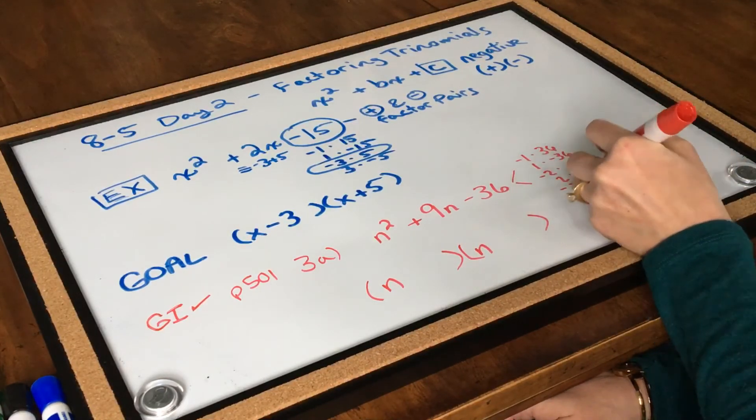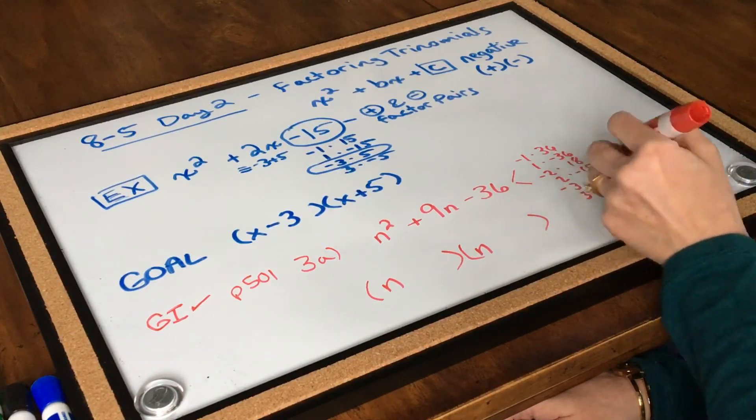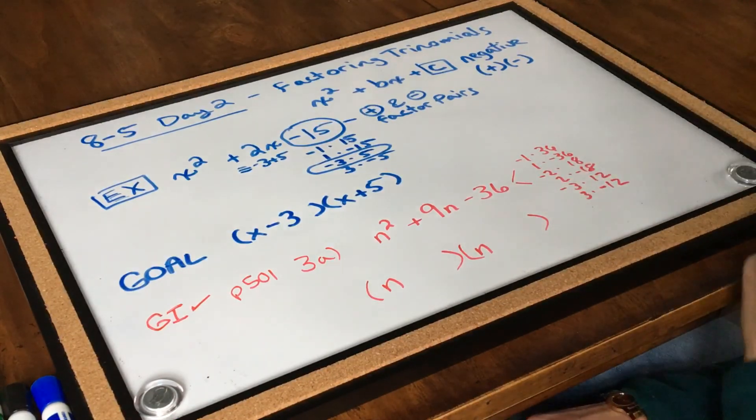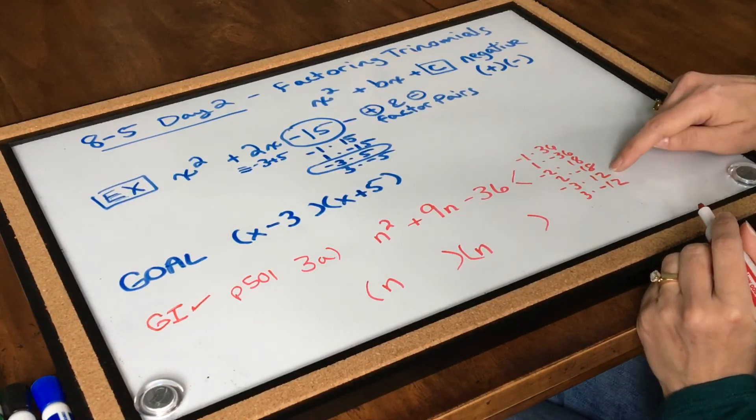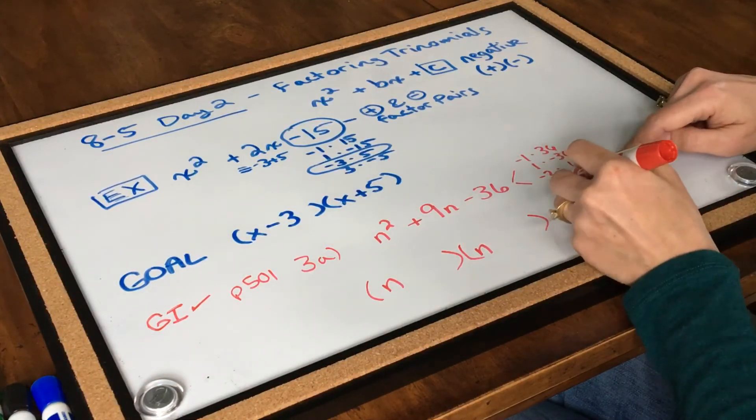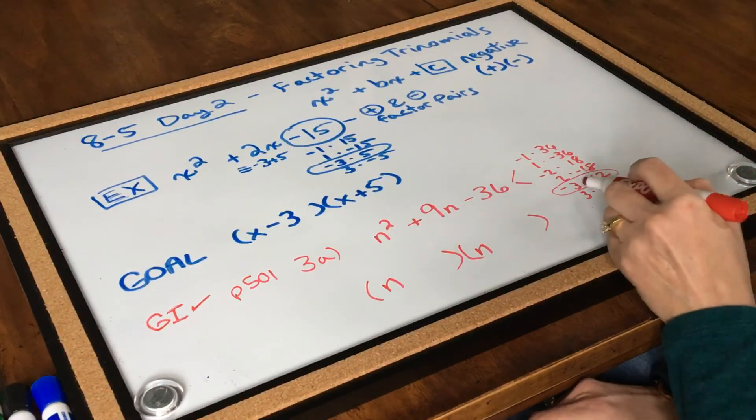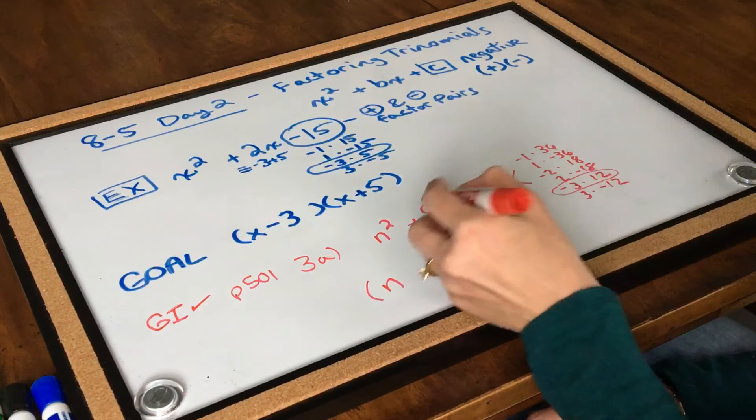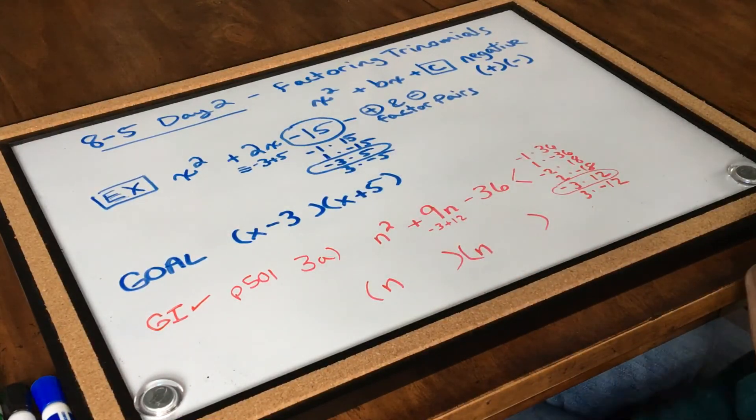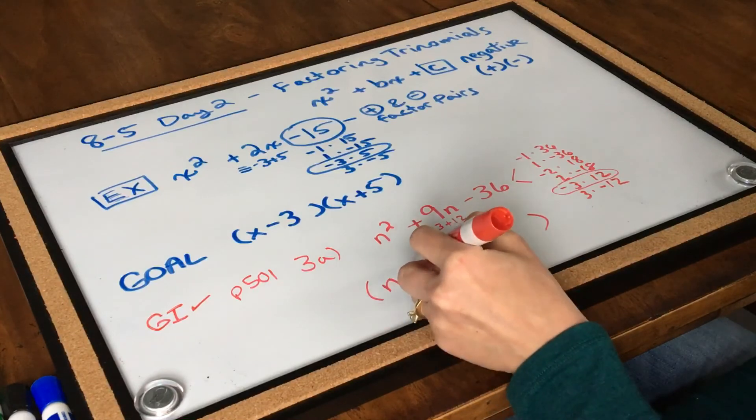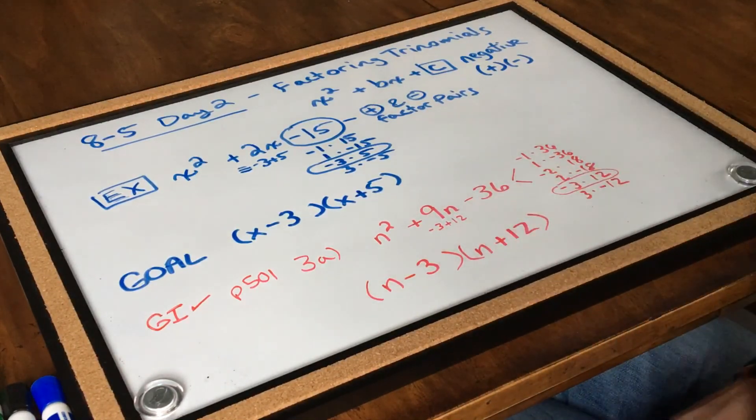What about 3 and 12? I've got negative 3 times positive 12 or positive 3 times negative 12. Here we go. I think we found it. If I look at this factor pair right here, negative 3 times 12, if I take negative 3 plus 12, negative 3 plus 12 gives me 9. So I have found my factor pair. This one is going to be n minus 3 times the quantity n plus 12. And I'm done.